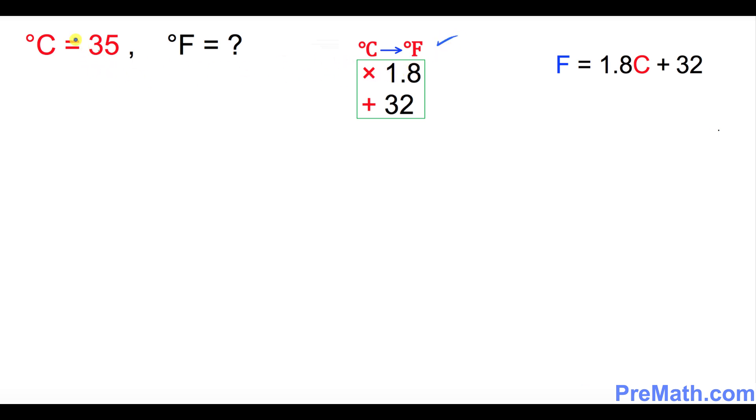So the very first thing is, whatever you got, C equals 35, I want you to multiply by 1.8. So put down 35 and multiply by 1.8. If you multiply 1.8, that's going to give you 63.